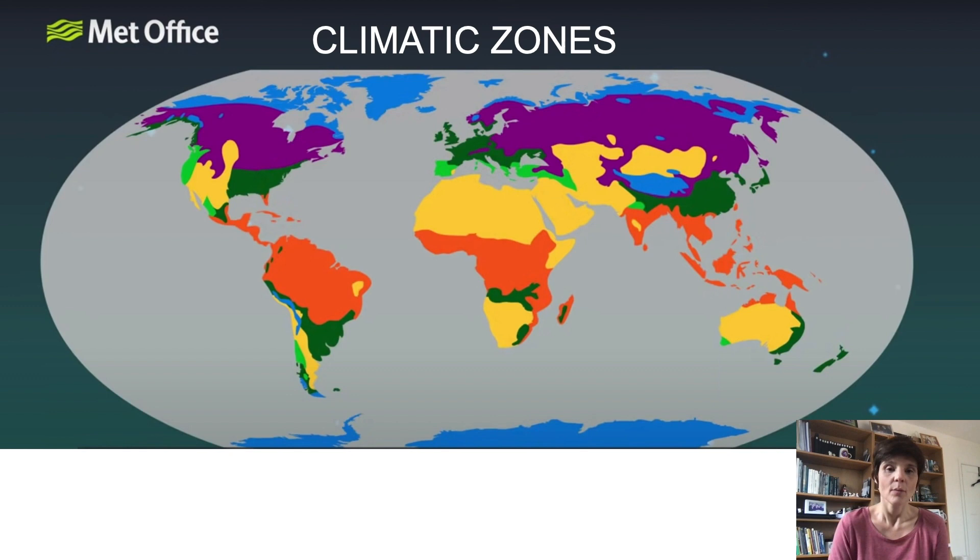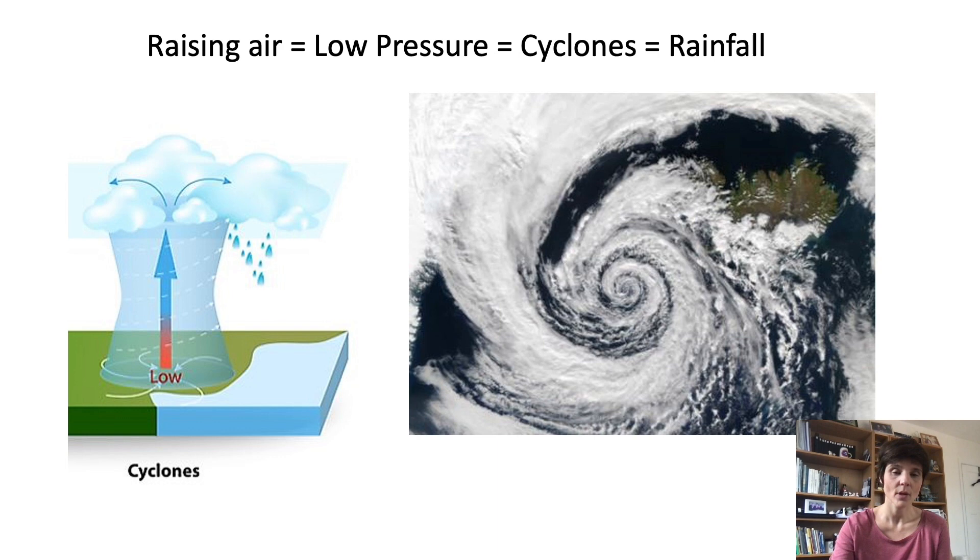But the convection cells are also controlling where it's raining more and where it's drier, giving us our climatic zones. Where air is rising, an area of low pressure is created and more precipitation happens there. This happens because the ascending air has a lot of water that it takes from the earth's surface, sea water, lakes, rivers, etc. When the air gets cooler in the upper part of the troposphere, the water condenses and forms clouds, hence rainfall. In this image, you can see the eye of the cyclone from space indicating the location of a low pressure center.